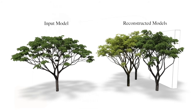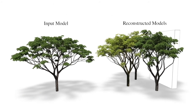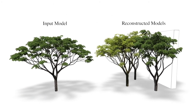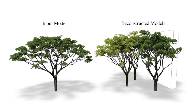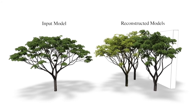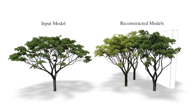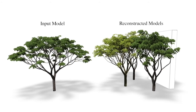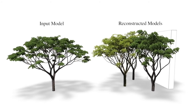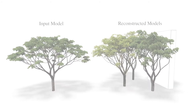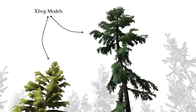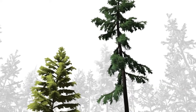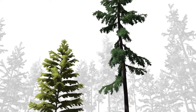When the parameters are found, the input tree can be stochastically reproduced and even regrown in a new environment. The representation of the input tree by a set of parameters for a growth model is a very effective data compression of the input. This scene shows various trees that have been reproduced from XFROG models.